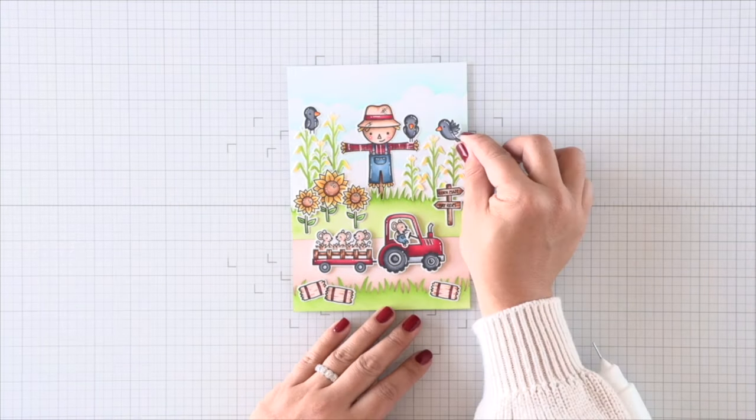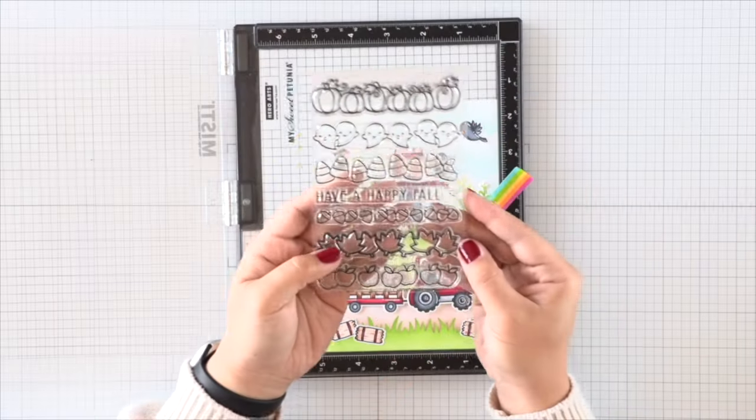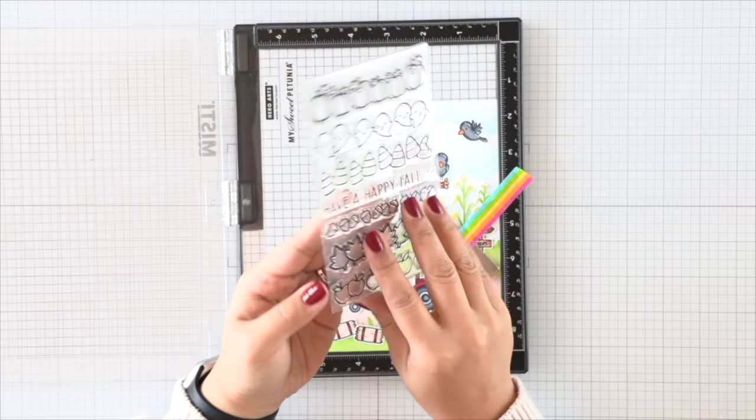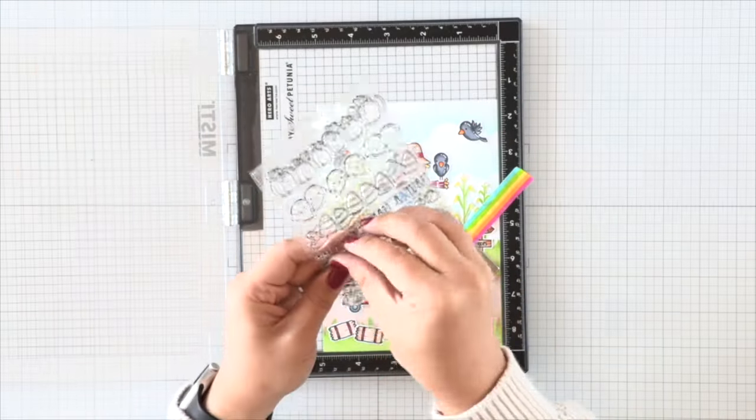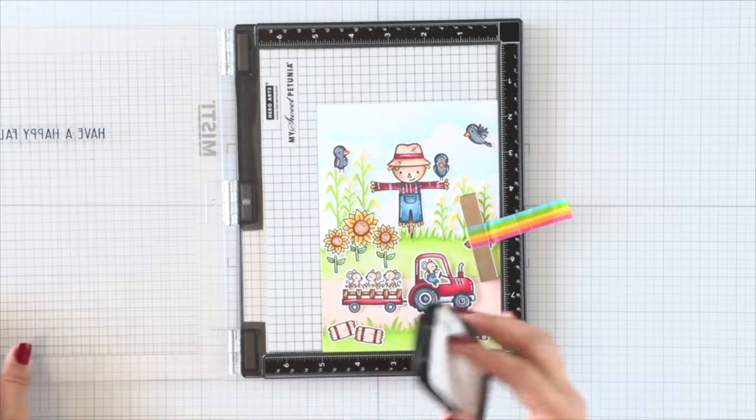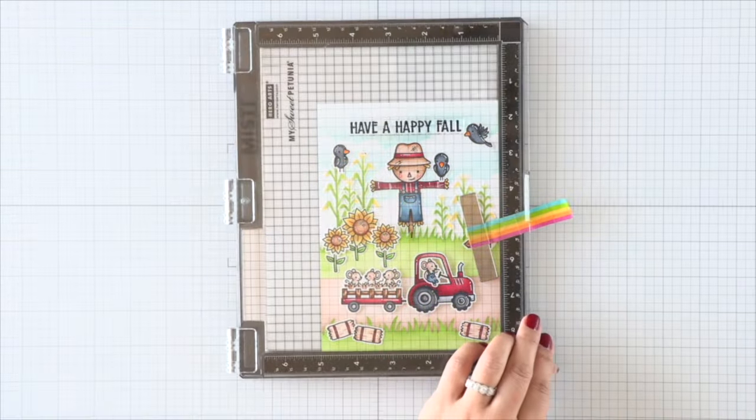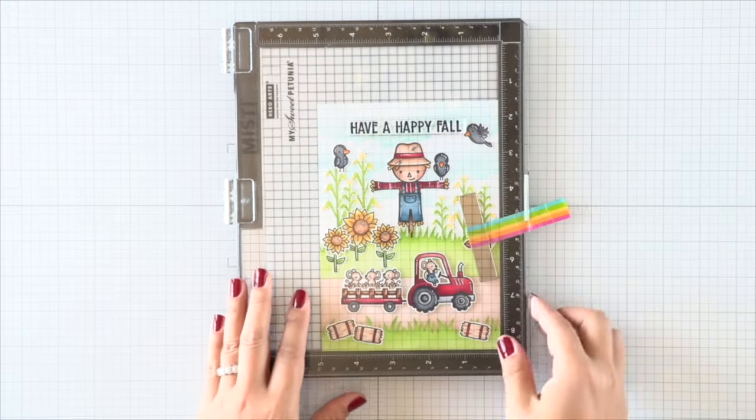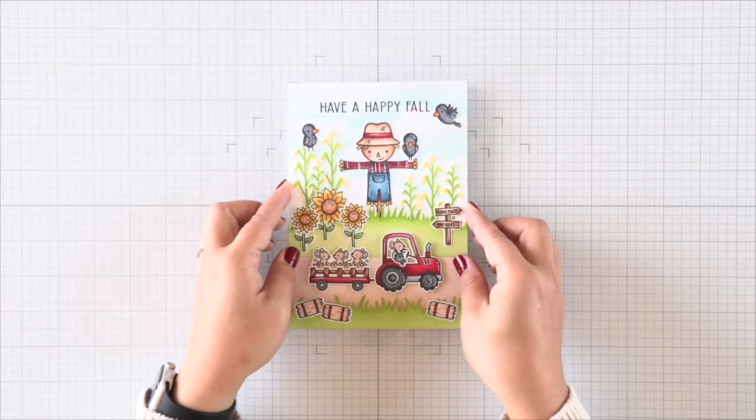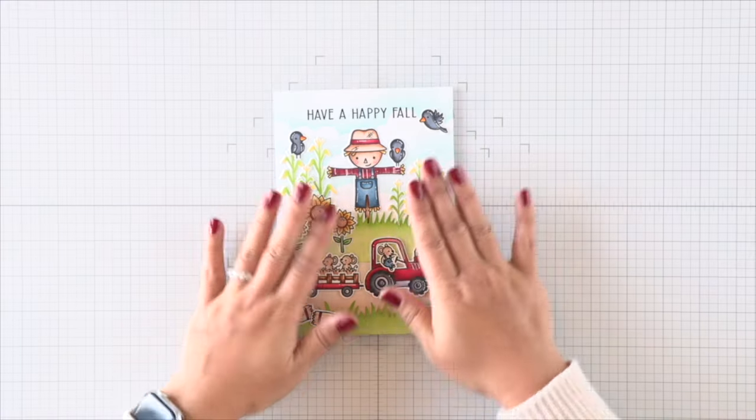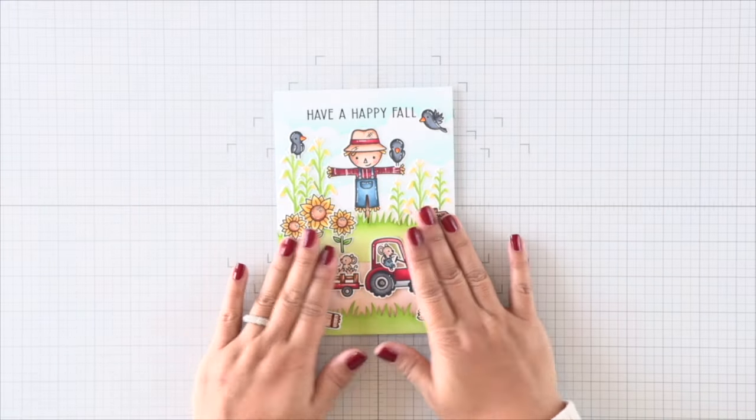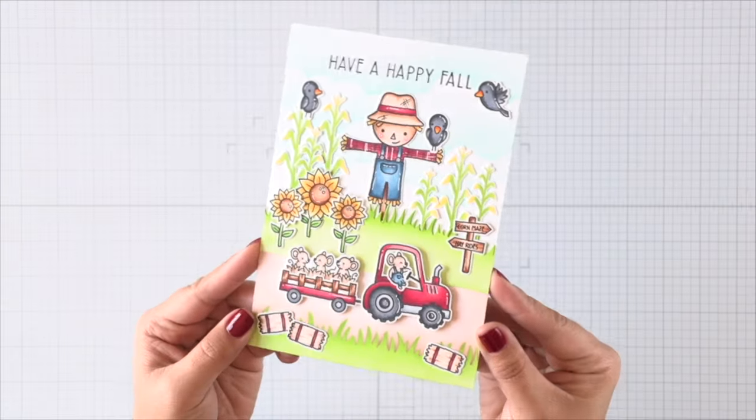And then add the sunflowers where there's open space, and then make sure that I still have some space for the sentiment. Since this card is a little bit bigger—it's 5 by 7 instead of 4 and a quarter by 5 and a half—I wanted to use a larger sentiment, and this one is from the Simply Celebrate Fall set. I stamped it directly at the top there in the center.